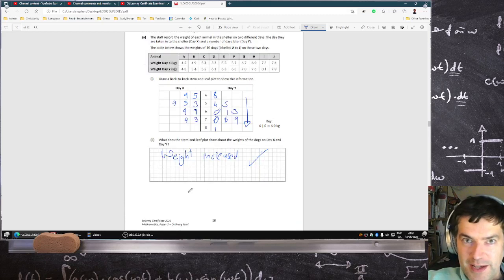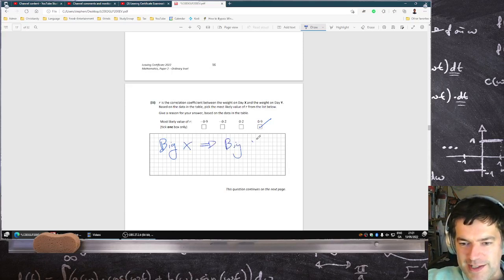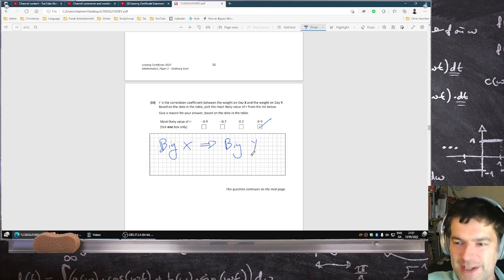So it seems like bigger x's and bigger y's. So that's a positive correlation. That's why I opted for the 0.9 one here, because bigger x's leads to bigger y's.